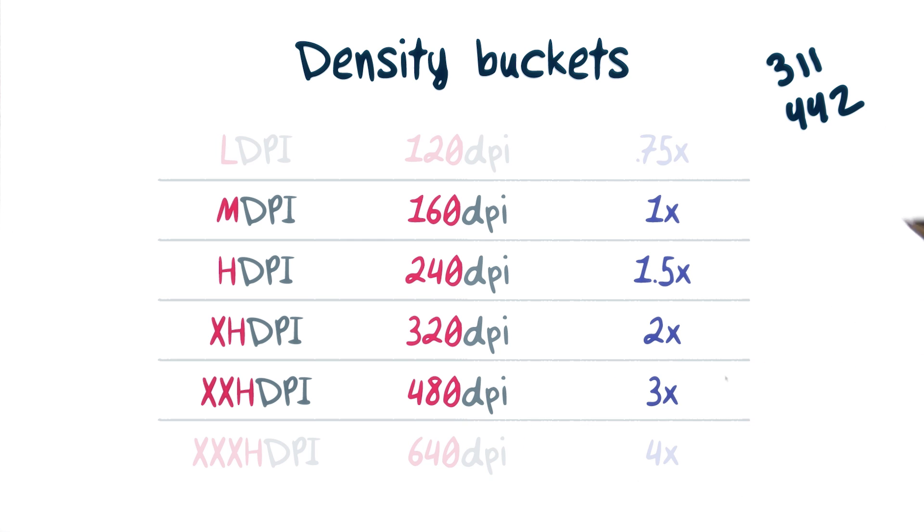Though there are density buckets for both incredibly low density screens, like 120 dpi, and really high density screens, like 640 dpi, you generally only have to work with the middle four shown here: 160, 240, 320, and 480 dpi. And these are sometimes referred to as 1x, 2x, and 3x.